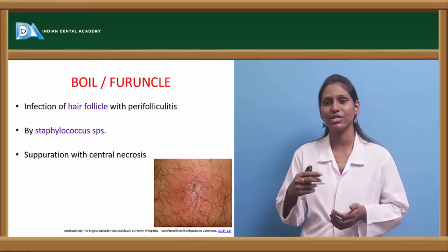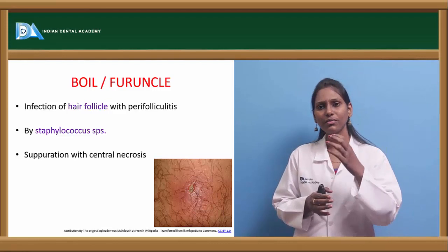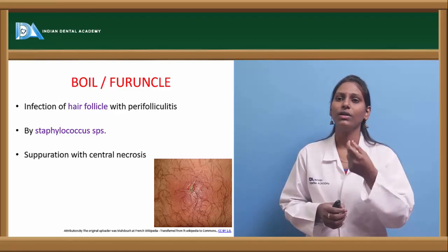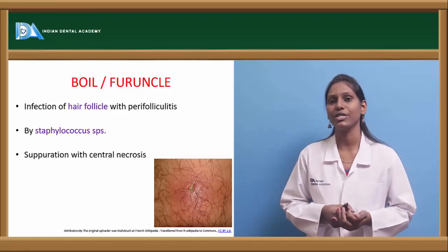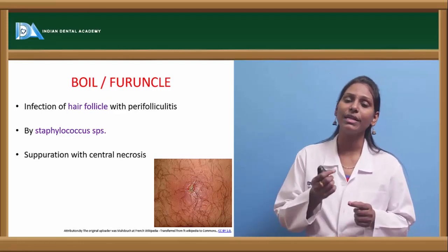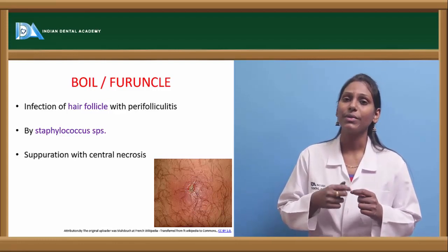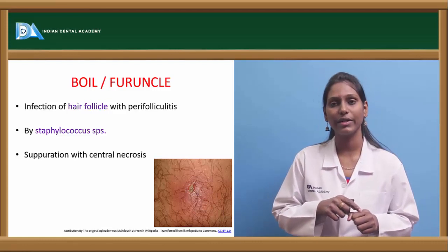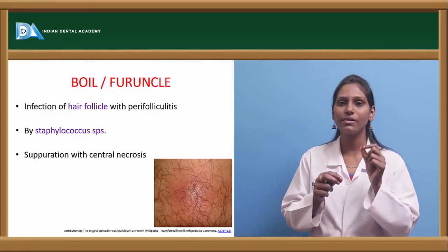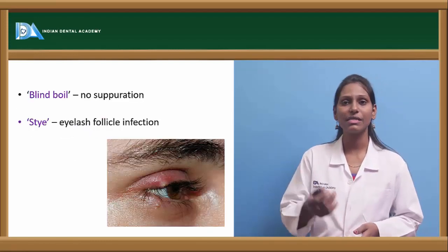Furuncles have suppuration within themselves because of cellular necrosis. If that suppuration is absent and the boil is just a small elevation or infection around the hair follicle without any suppuration, it is called a blind boil. The pathological feature is that infection — especially by Staphylococcus species — causes central necrosis leading to a suppurative mechanism, seen as small elevated pustules.